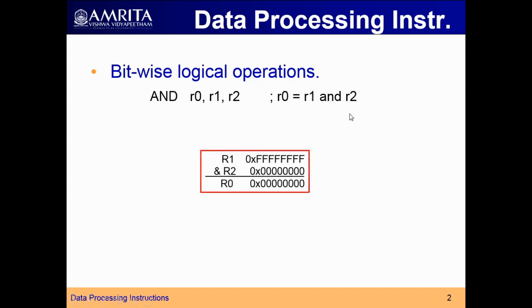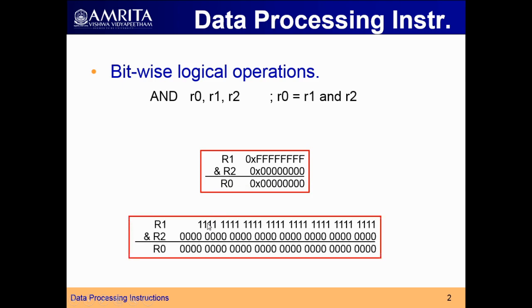Taking an example, let us take R1 equal to 0xFFFF and AND it with R2, where R2 is having 0x0000. When you are ANDing 1 with 0, you get 0. So all the bits will be 0 and the result will be stored back to R0. FFFF means all 32 bits will be 1. When you AND these two, bitwise AND operation is done: 1 AND 0 is 0 for all bits, and that result is stored in R0. This is a bitwise logical AND operation.